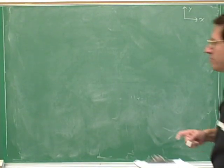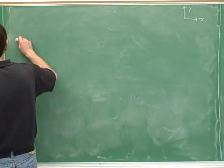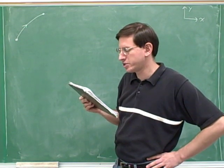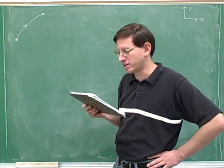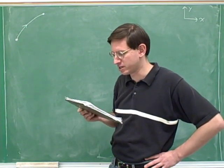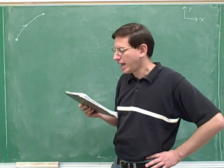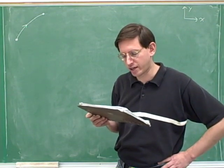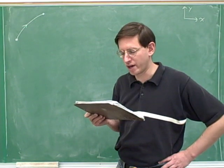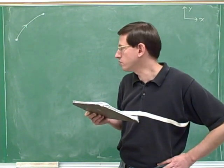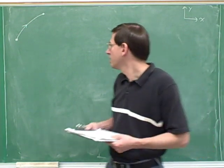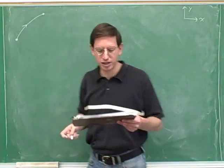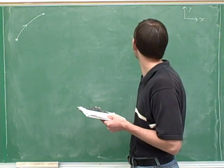Now we want to draw the path of the object. We can draw it like this. Initially the object was moving in the positive x and positive y directions, and it's speeding up in both directions because the x acceleration is parallel to the initial x velocity and the y acceleration is parallel to the initial y velocity. So we started moving up and to the right and we're still moving up and to the right at the end.